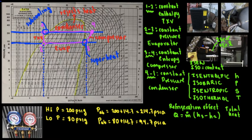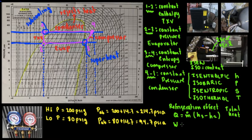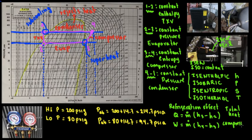Now, what is the work that the compressor is doing? This tells you about energy consumption and bills. The compressor work equals the mass flow rate times H4 minus H3. That gives you the compressor work.